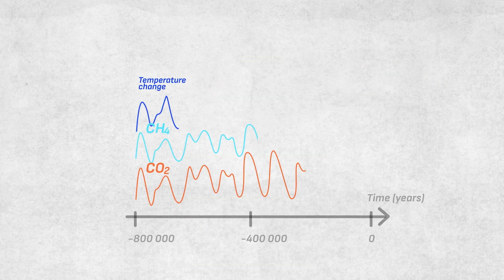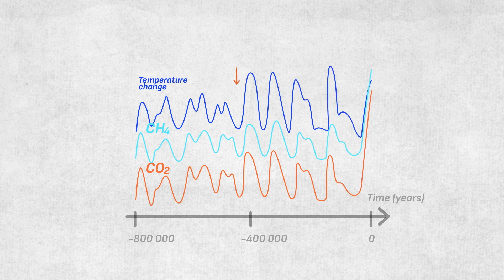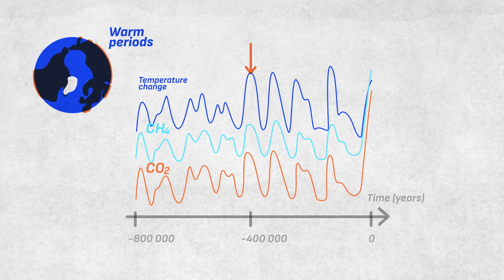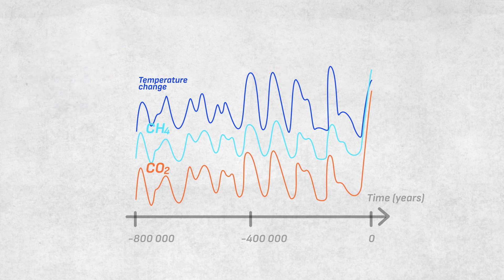40 years ago, ice core research led to two crucial discoveries. Firstly, carbon dioxide and methane atmospheric concentrations were lower during cold periods and higher during warm periods. And with these results, the ice core community demonstrated for the first time the direct relationship between atmospheric greenhouse gas concentration and temperature.